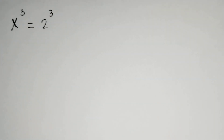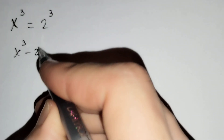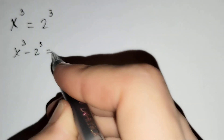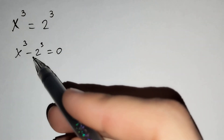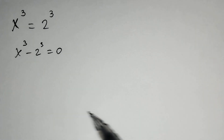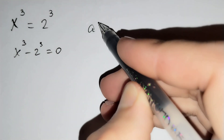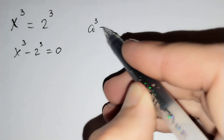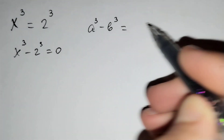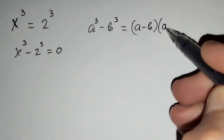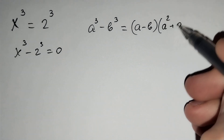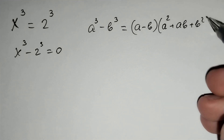Firstly, if we move 2 power 3 to the other side of our equation, we get x power 3 minus 2 power 3 equals to 0. And we know that a power 3 minus b power 3 equals to a minus b times a squared plus a b plus b squared.